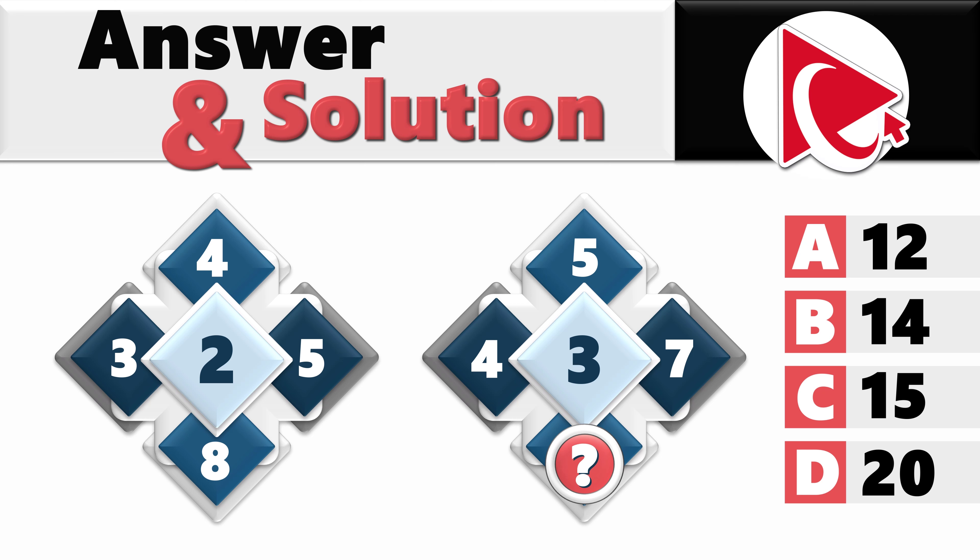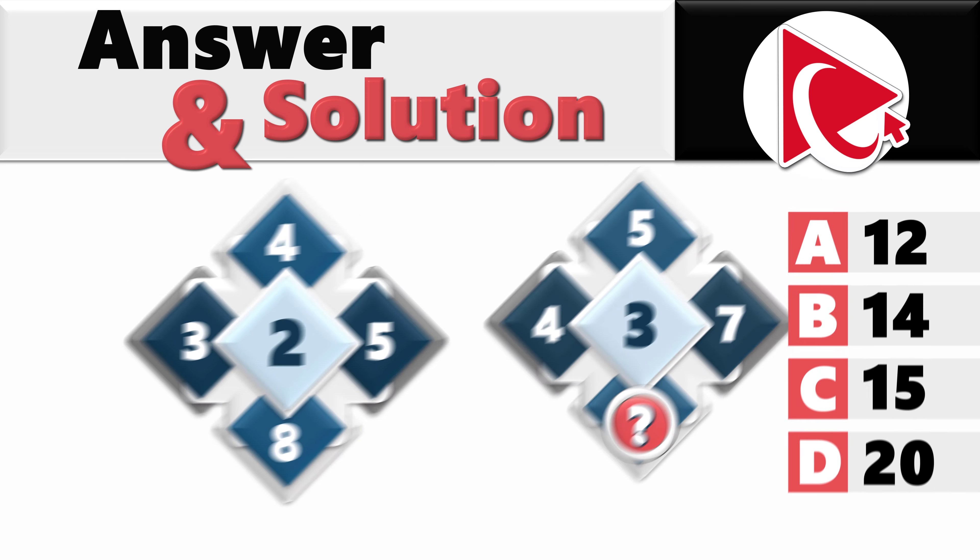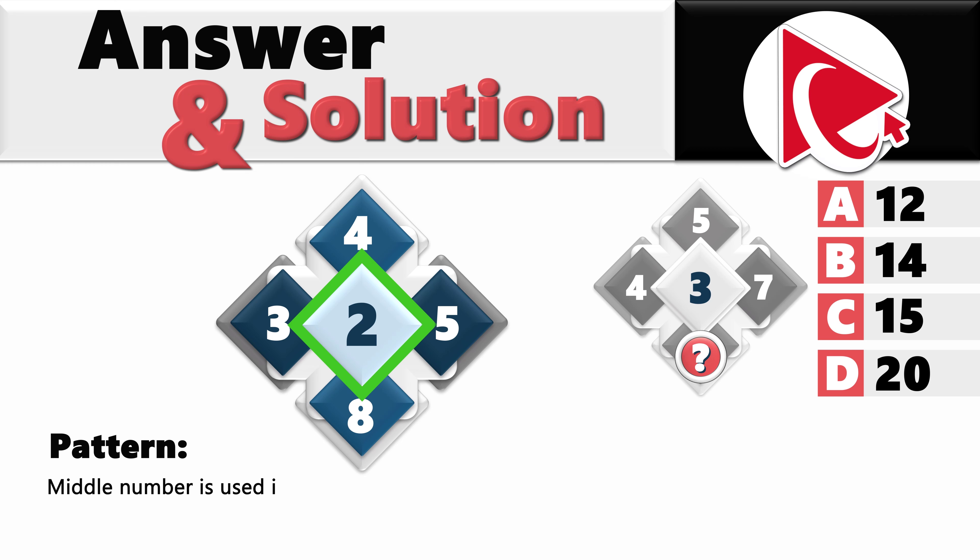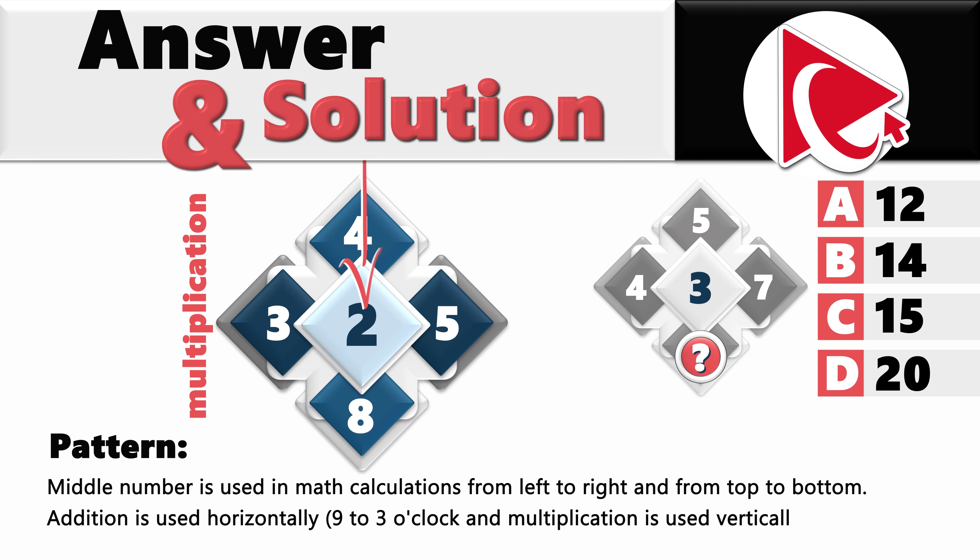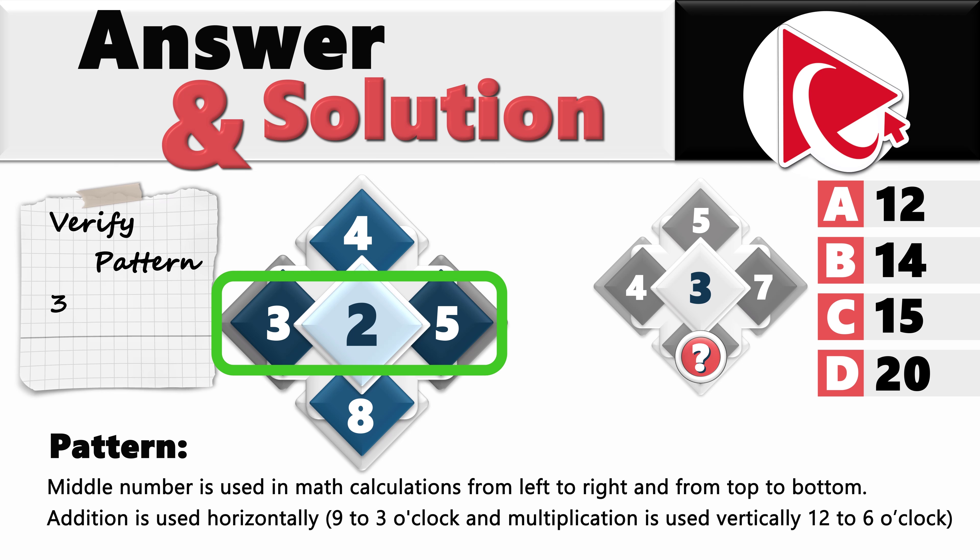The numbers here are calculated as a result of the math operations. The middle number is used in math calculations from left to right and from top to bottom. Addition is used to calculate horizontally 9 to 3 o'clock and multiplication is used vertically 12 to 6 o'clock. Let's look at the first diamond. 3 plus 2 equals 5 and vertically, 4 multiplied by 2 equals 8.